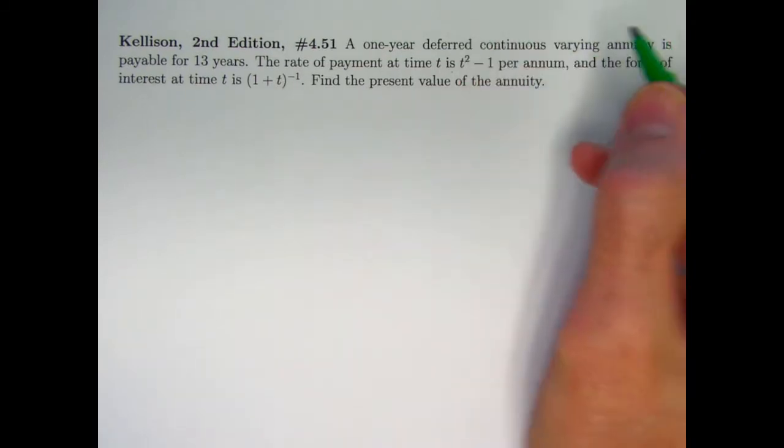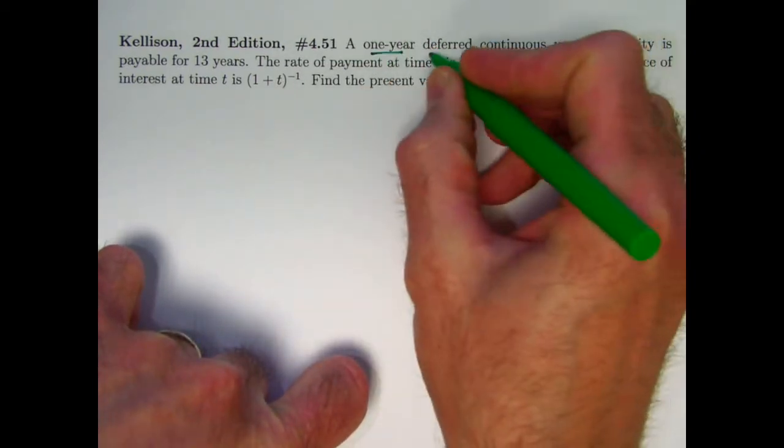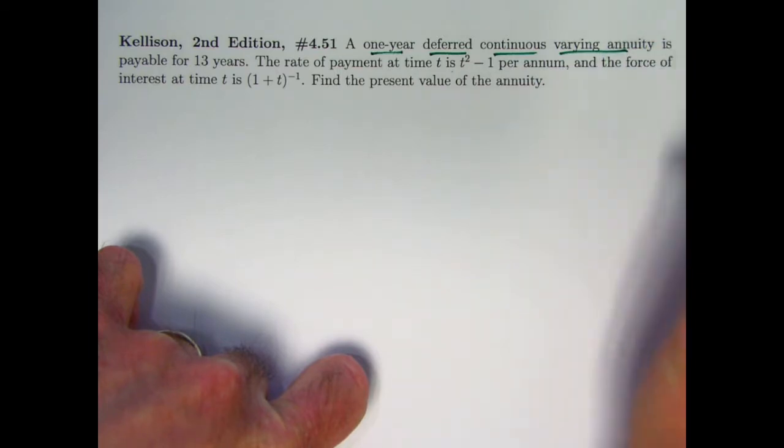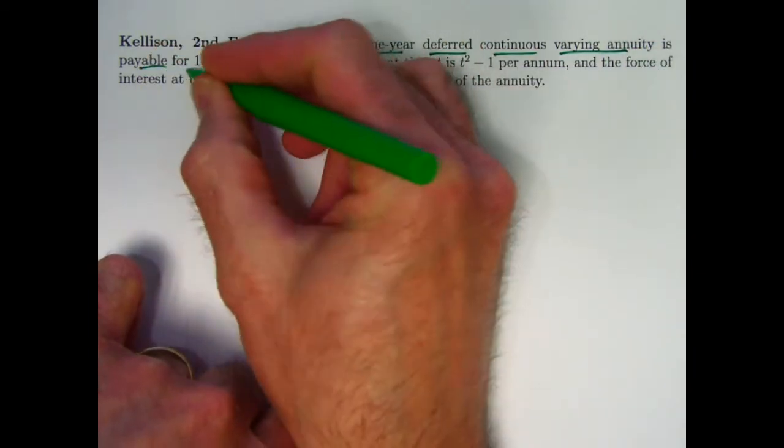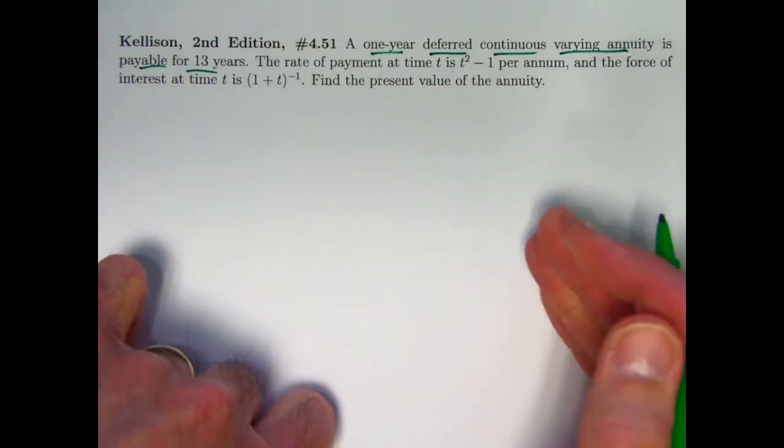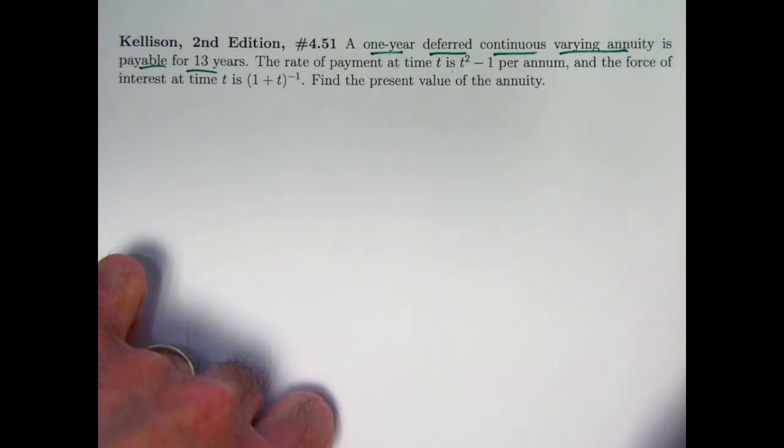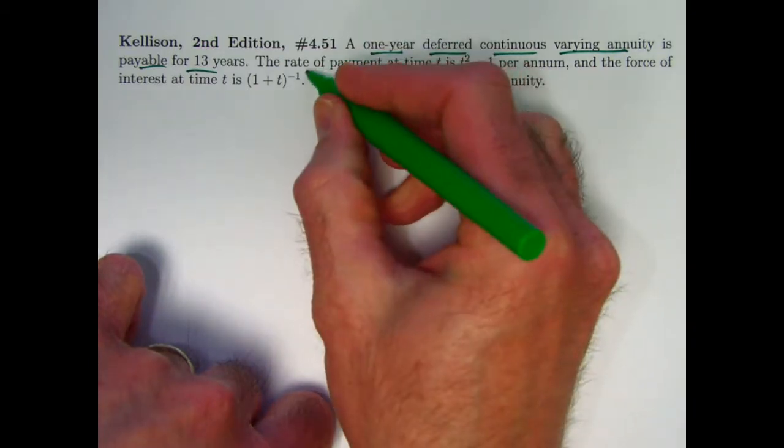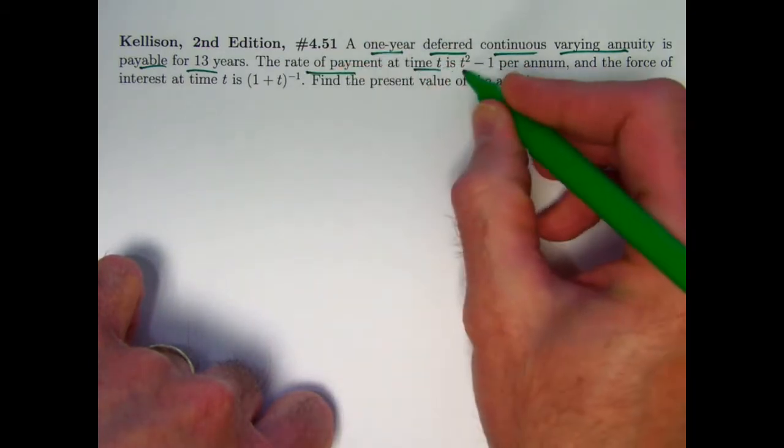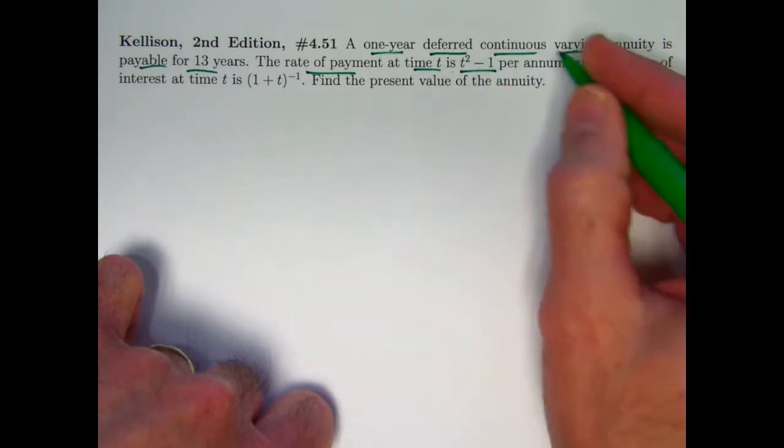Moreover, this continuous annuity is deferred. It's over 13 years, so the payments would start at time 1 and end at time 14.